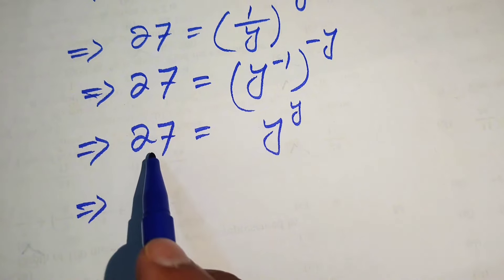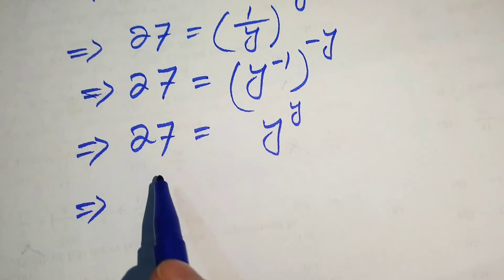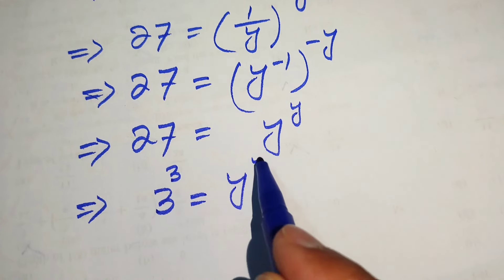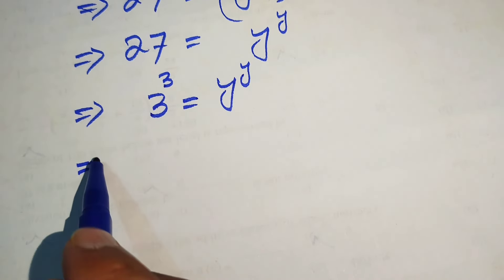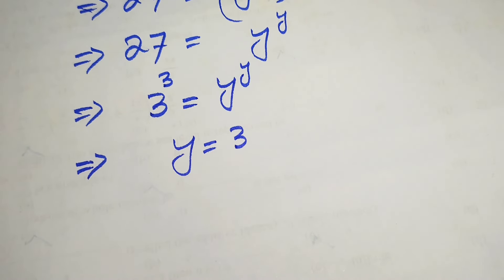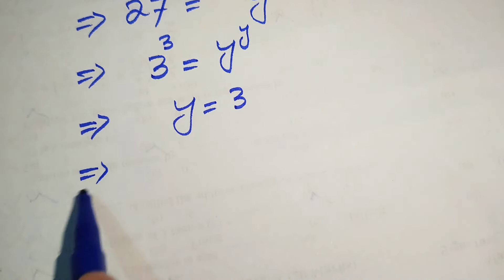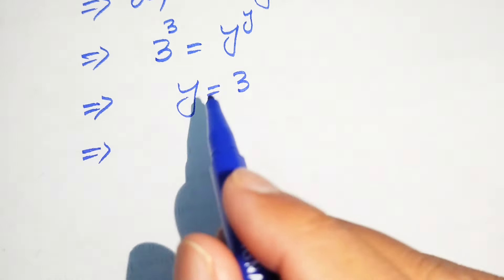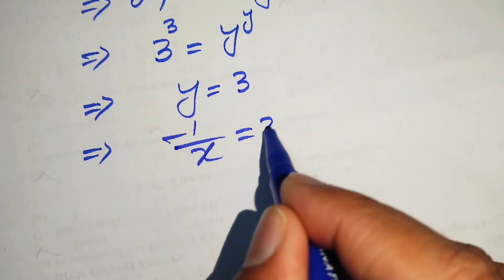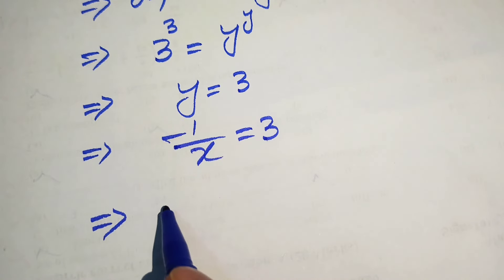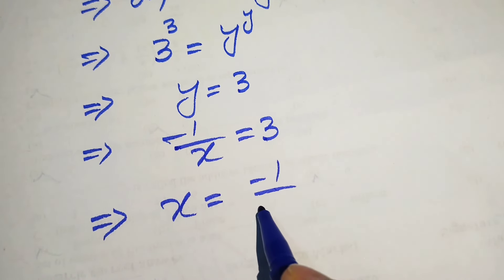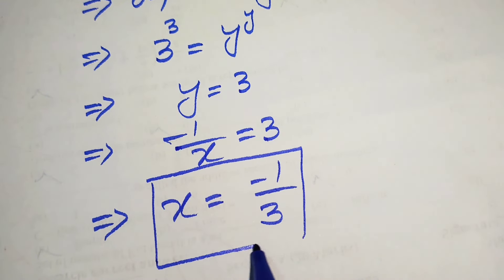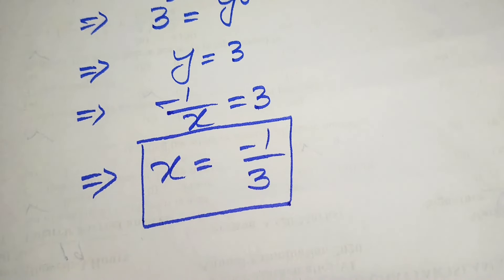In the next step we rewrite 27 in prime factor form: 27 equals 3 to the power of 3, and we have y to the power of y. Comparing both sides, we get y equals 3. Back-substituting, since y equals minus 1 over x, we have minus 1 over x equals 3, which gives x equals minus 1 over 3. This is the final answer from method 1.